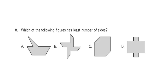Question 8: Which of the following figures has the least number of sides? Count the number of sides in each figure and find out the least one. The correct answer is option C.